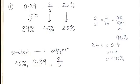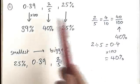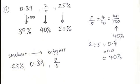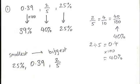And the biggest one was 40%, which in its original format is 2 fifths. So we have ordered those three fractions, decimals and percentages. It's important to show your working — show how you converted them all into percentages so that you can really get those method marks.